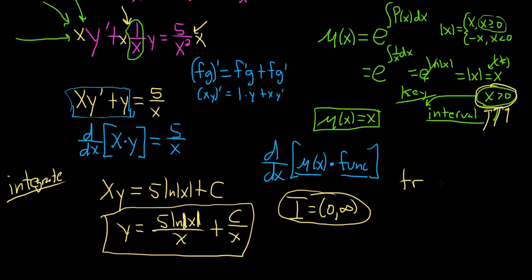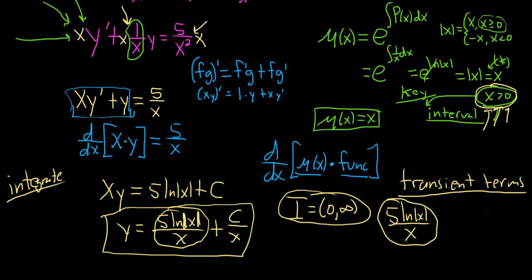We're also asked to find transient terms in this problem. Transient terms are just terms that approach 0 as x goes to infinity. So they're both transient terms. So this approaches 0 because the denominator x grows faster than the numerator, because x grows faster than the natural log of x. So this approaches 0. So it's a transient term.